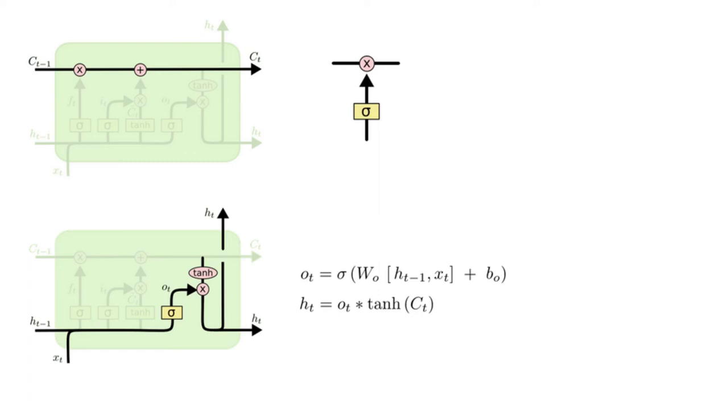Finally, we need to decide what we are going to output. This output will be based on our cell state but will be a filtered version. First, we run a sigmoid layer which decides what part of the cell state we are going to output. Then we put the cell state through tanh to push the values to be between -1 and 1 and multiply it by the output of the sigmoid gate so that we only output the parts we decided to.